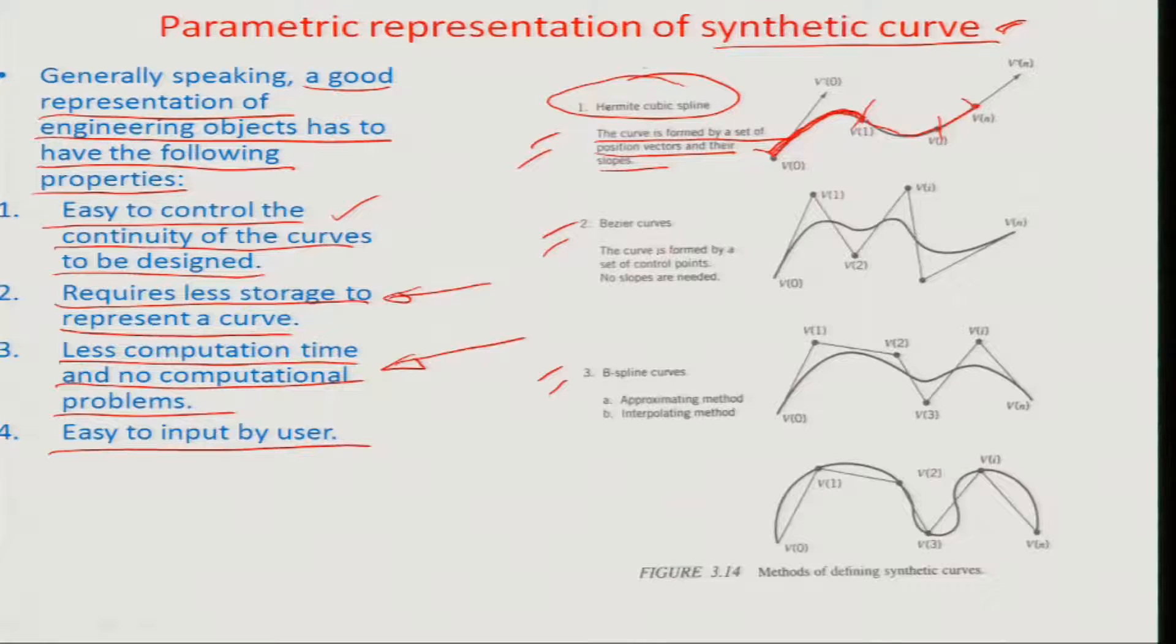The Bezier curves where the curve is formed by a set of control points, no slopes are needed. In a way it is handy. For example, in this case you can see there are different control points over which this complex surface topology has been developed by just variation of this control point. The idea here in the Bezier curve is that practically speaking the slopes at certain points are very difficult to measure. For example, how will you measure the slope at v dash 0 or v dash 1 at this point? Bezier has an advantage over Hermit in that it does not need the slopes, it only needs the position vector of the points itself.